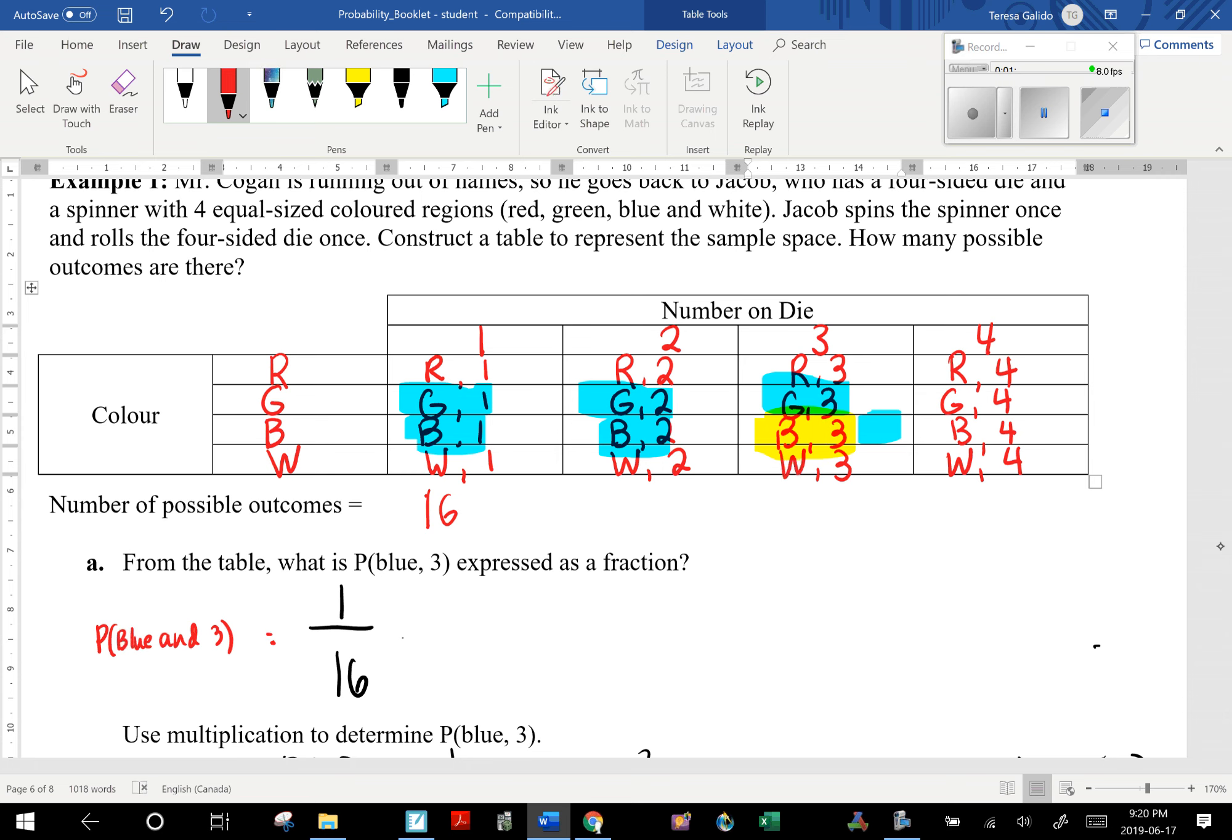Blue and 3. So if you can see, this yellow highlighted outcome here is actually the result of blue and 3. There's only 1 out of the 16 results in the sample space. Therefore, the probability of getting a blue and a 3 expressed as a fraction is 1 out of 16 based on the outcomes in the table of values.